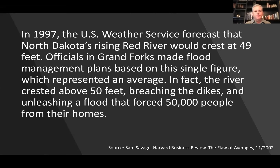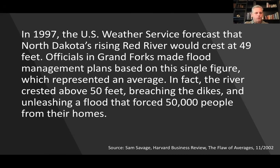This might or might not have happened because of a bar chart, but in 1997, based on an average put out by the US Weather Service that the Red River crests at 49 feet on average, officials made a flood management plan based simply on that average. But as averages are just measures of central tendency, it was only a matter of time before a flood crest was above that average. In 1997 it went to 50 feet and more than 50,000 people were forced from their homes. There is very real impact from how we represent and understand averages to how people form policies.